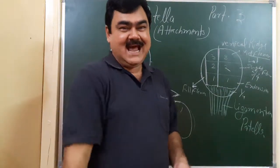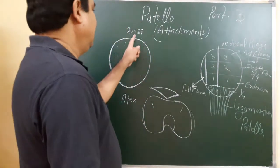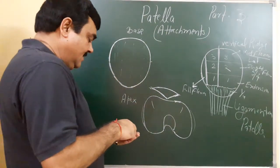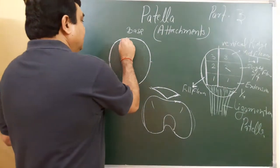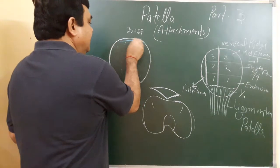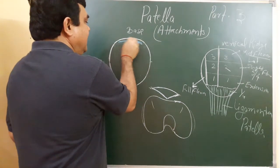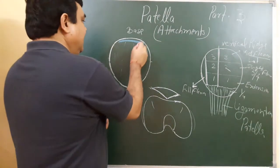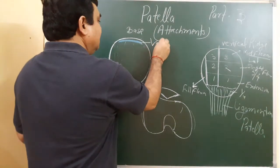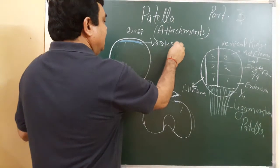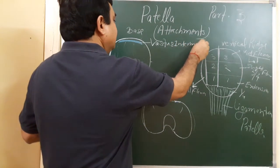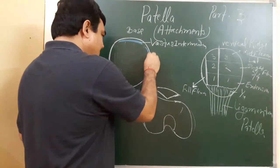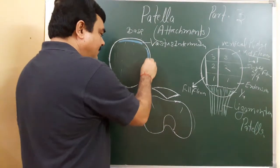Yes, now attachments on the patella. Here, this is the anterior surface of the patella. On the base, near the base, this anterior surface gives attachment to vastus intermedius. This is vastus intermedius. On the medial side, along the medial border, this is vastus medialis.